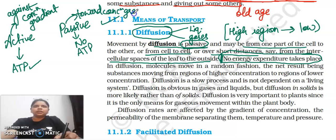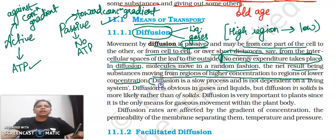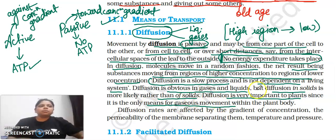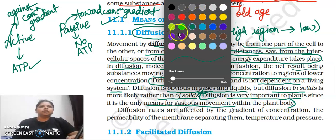In diffusion, molecules move in a random fashion, with the net result being movement from a region of higher concentration to lower concentration. Diffusion is a slow process and is not dependent on a living system. It is obvious in gases and liquids. Diffusion is very important to plants since it is the only means for gaseous movement in plants.